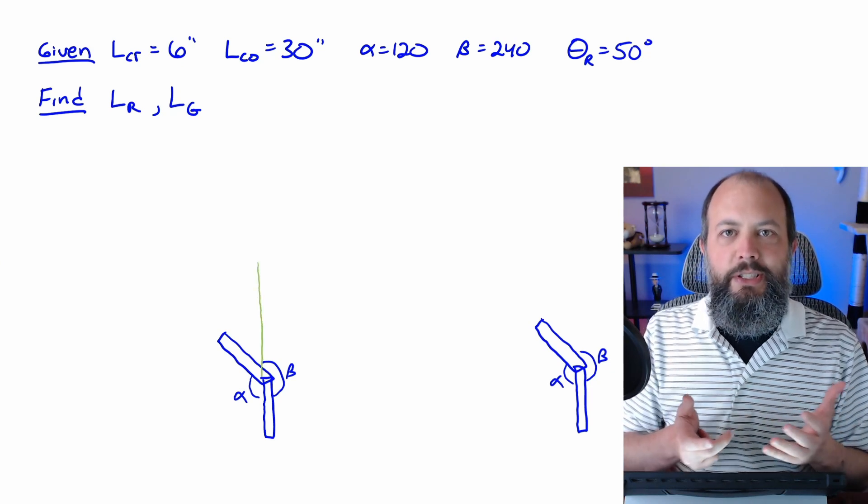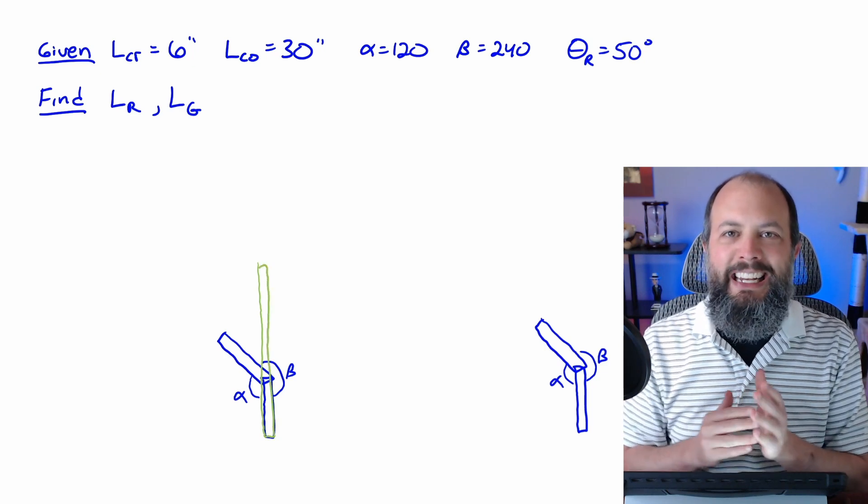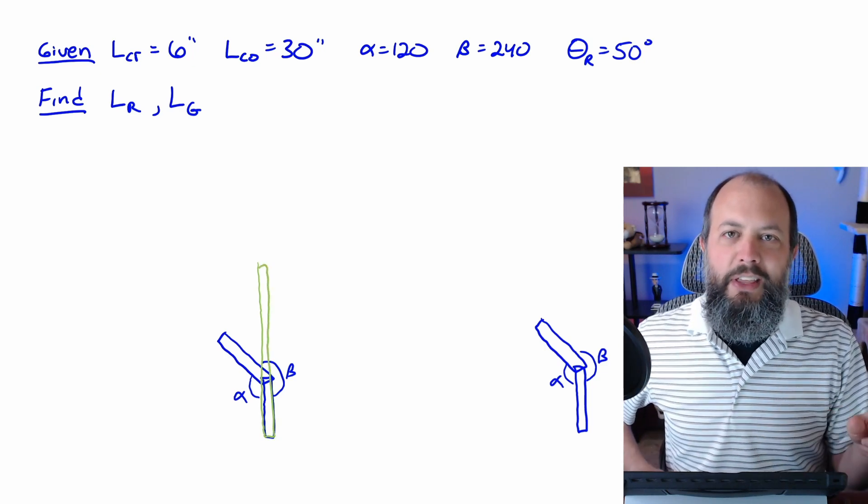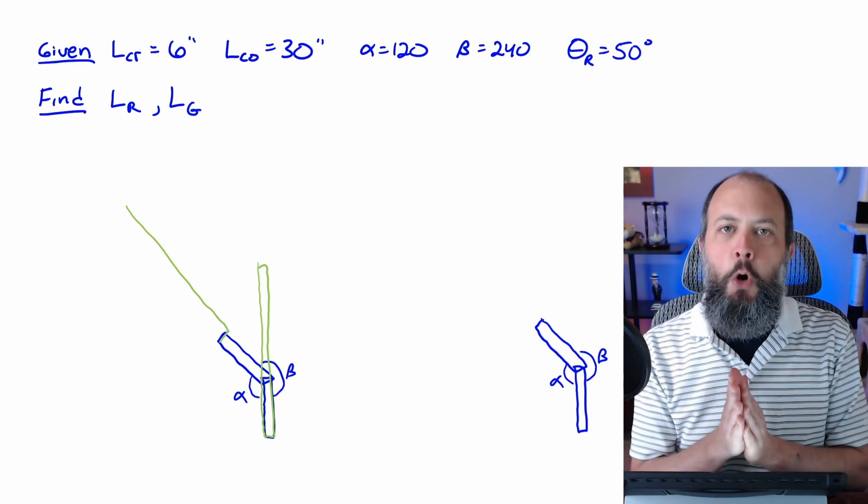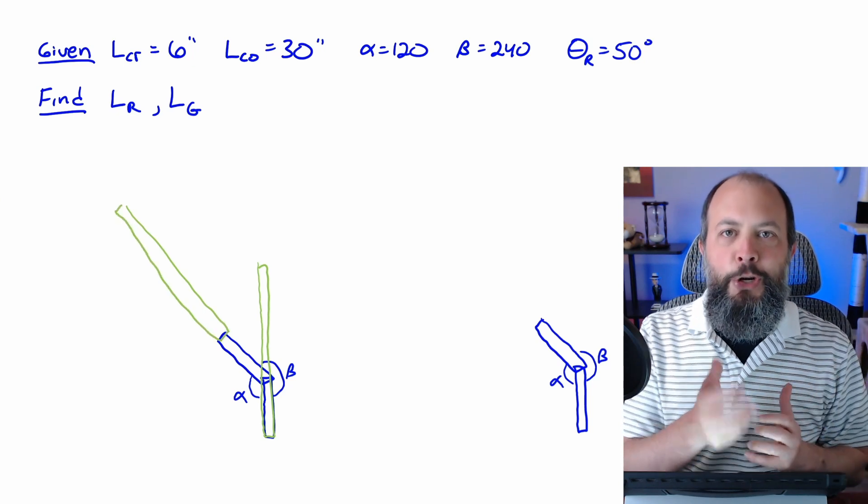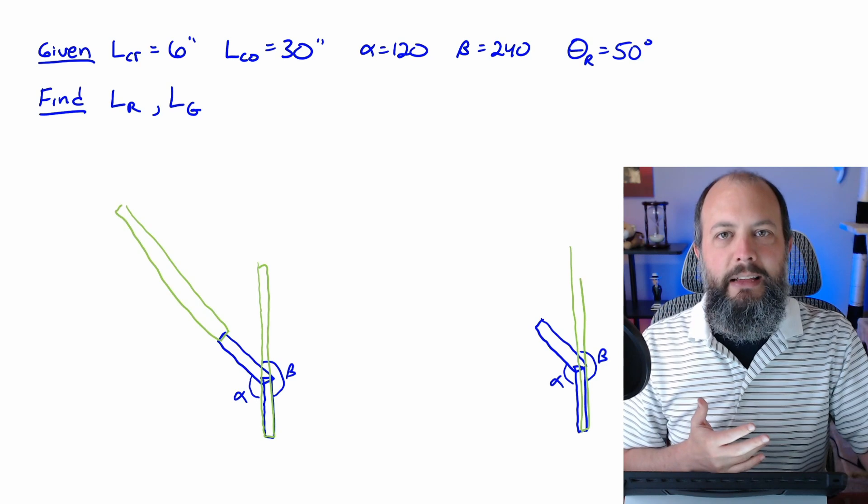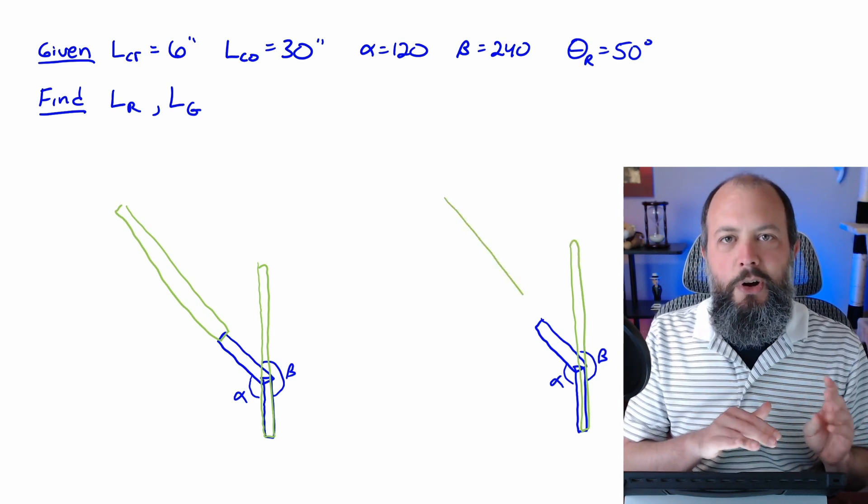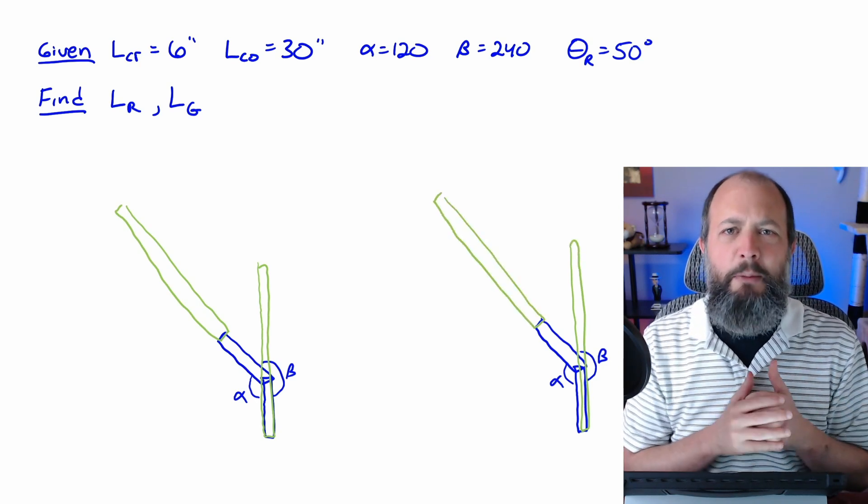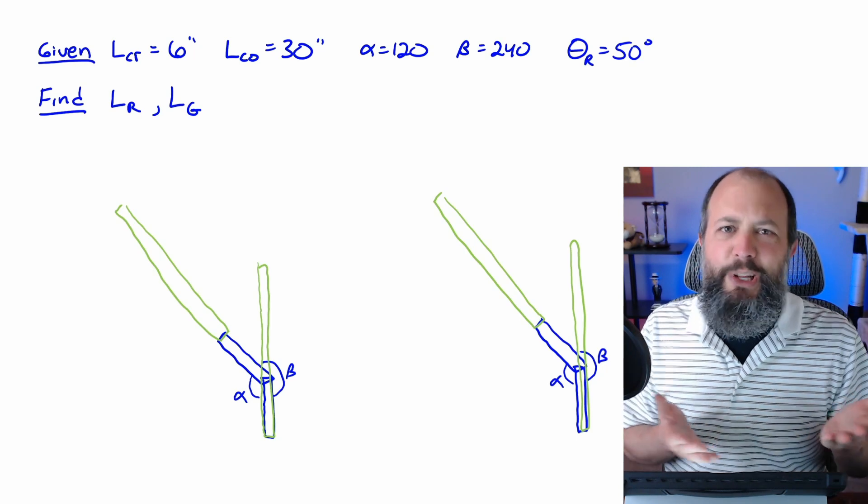So start off by drawing your crank in the two toggle positions. At the toggle positions, the coupler will always be perfectly in line with the crank. At the end of the pull stroke, it will be overlapping the crank. And at the end of the push stroke, it'll be extended past the end of the crank. So next I add the coupler to my drawing, and I'm not worried too much about making it perfectly to scale. It just needs to be generally close enough.